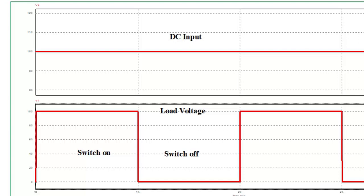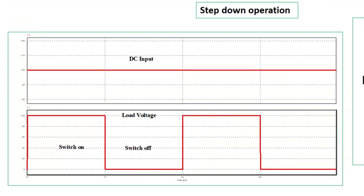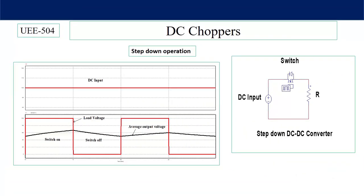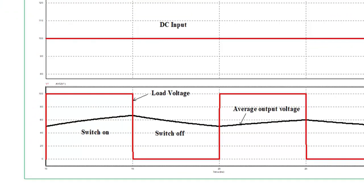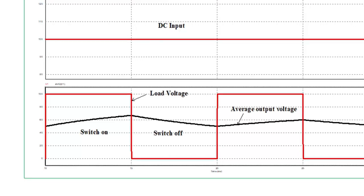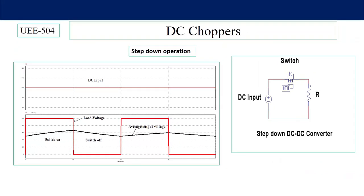So average output voltage across the load is less than the input voltage. You can see in this waveform, the average output voltage is less than the DC input voltage. That's why the name is step down converter.